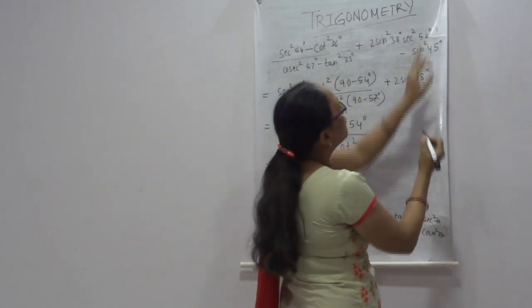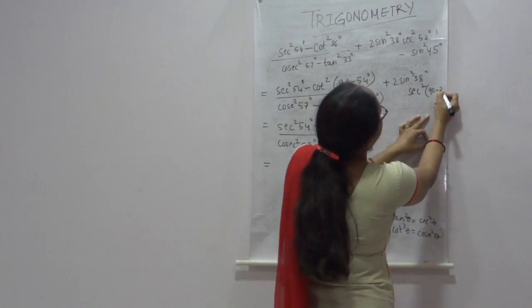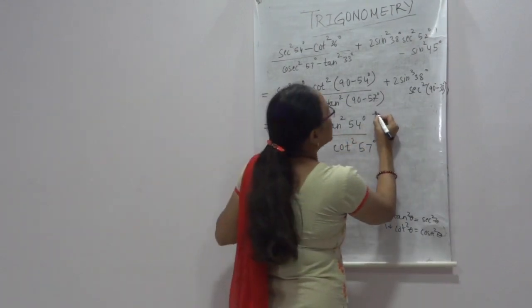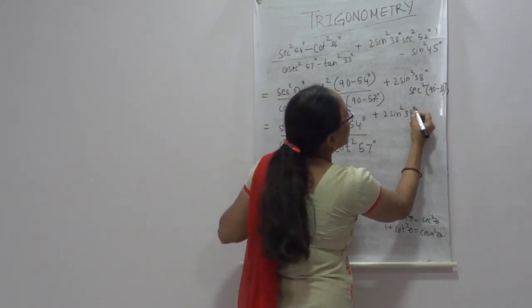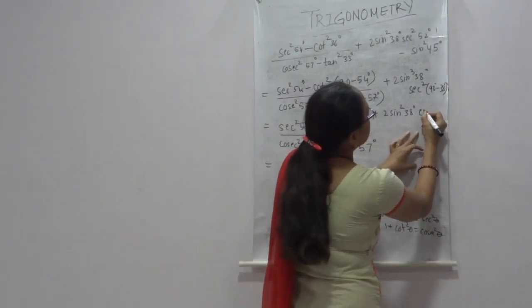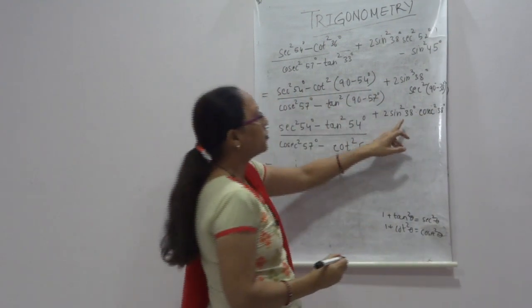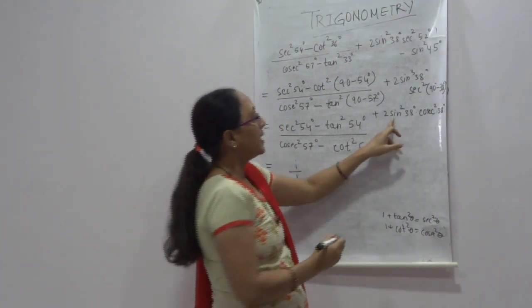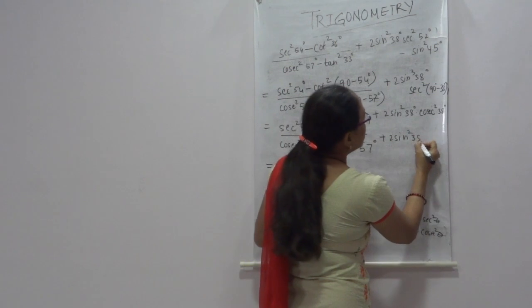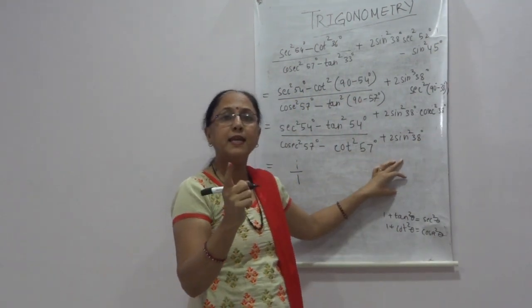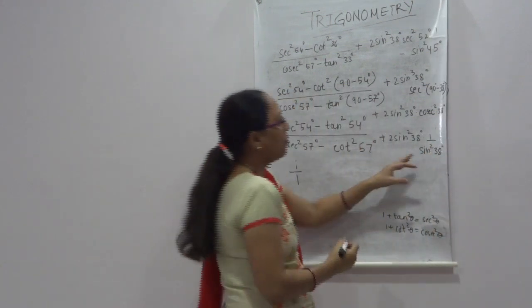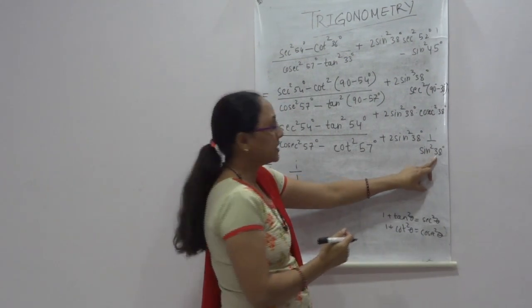We write sec²52° as sec²(90 − 38°). Using the identity sec(90 − θ) = cosecθ, this becomes cosec²38°. We know the relation between cosec and sine — they are inverses. So cosec²38° = 1/sin²38°. Then sin²38° and sin²38° cancel out, giving us +2.